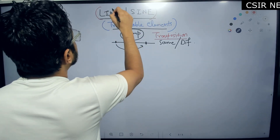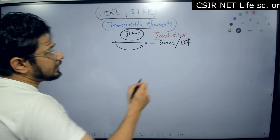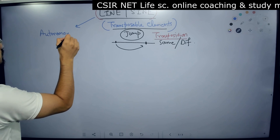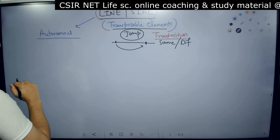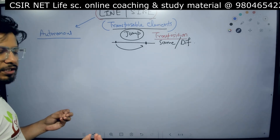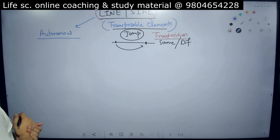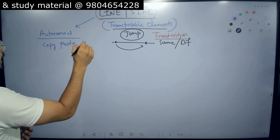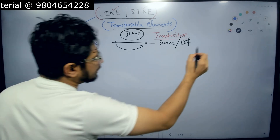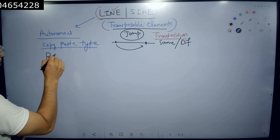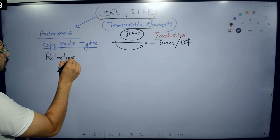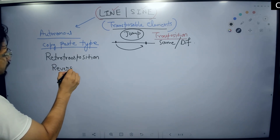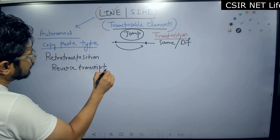There are two examples we are looking at: LINE and SINE, both as transposable elements. The difference between these two: LINE elements are autonomous elements for transposition. They do not require any other gene components to help move from one location to another. They are autonomous in nature and they follow a copy-paste type transposition, involving retrotransposition using reverse transcriptase enzyme.